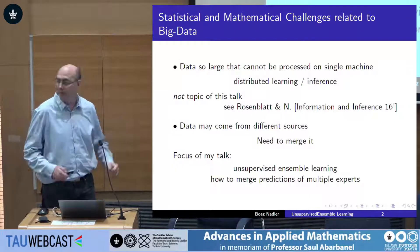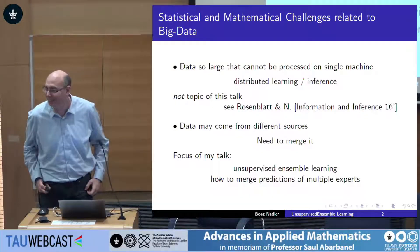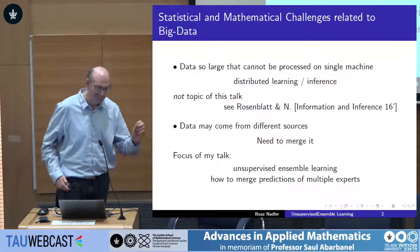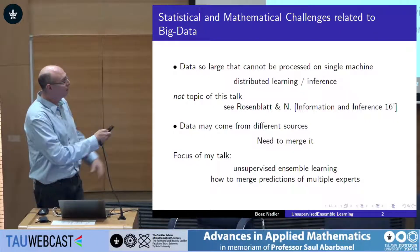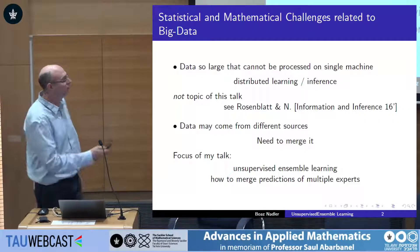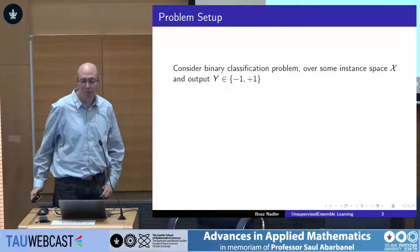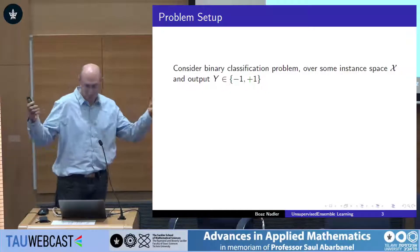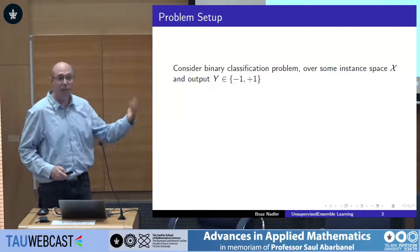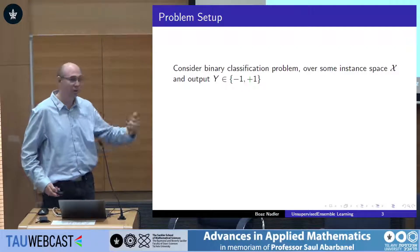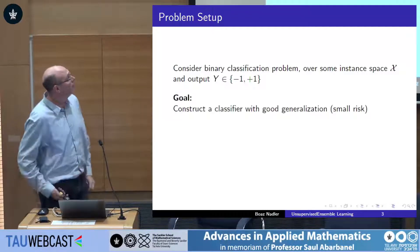It's not very technical, I hope. I think even my son will be able to understand part of it. So the question is how to merge the predictions of multiple experts. Let me be concrete. Suppose we're looking at a binary classification problem. There are certain things you observe, features, and you want to predict an outcome, a label, which is either plus one or minus one. Let's say if a person has cancer or does not have cancer, if he will repay the loan or not.